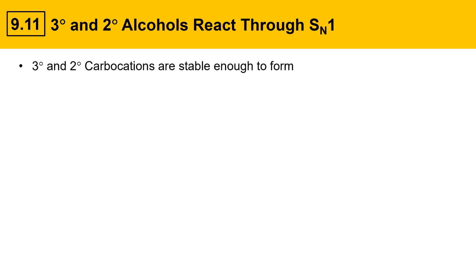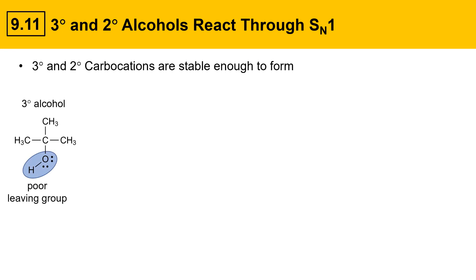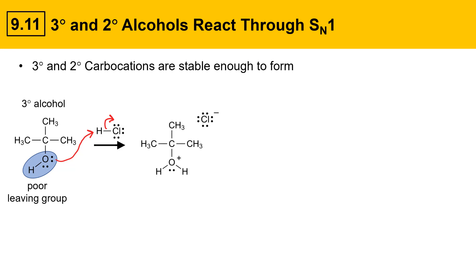Let's take a look at an example of an alcohol reacting under these conditions. Here's a tertiary alcohol. As we've seen before, OH is a poor leaving group and it can't leave on its own. However, if an acid like HCl is added, the acid can protonate the alcohol, making a protonated OH group, which is now a good leaving group. That'll leave as water, which is a weak base.